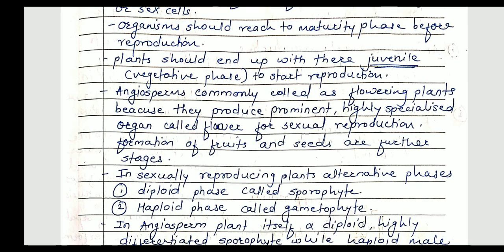There are five classes in the kingdom Plantae: Thallophyta, Bryophyta, Pteridophyta, Gymnosperm, and Angiosperm. Thallophyta, Bryophyta, and Pteridophyta are called lower plants because they do not have a well-developed structure of flower — some organelles are absent and some are in developing condition.